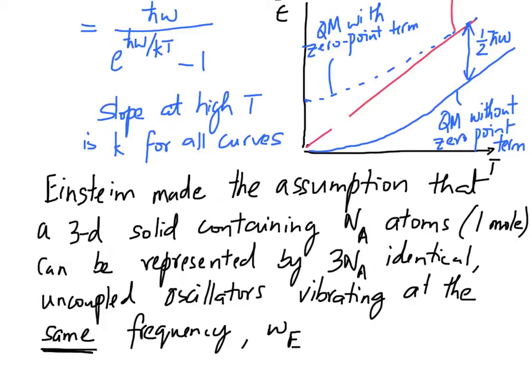That is the leap that Einstein took, and then the assumption that he made after taking that leap is that these are all identical springs that compose the solid and they all oscillate at the same frequency omega e, and that is something we call the Einstein frequency.